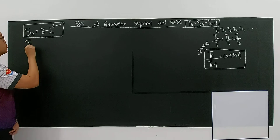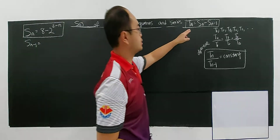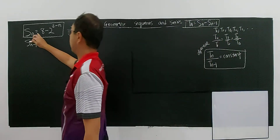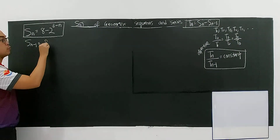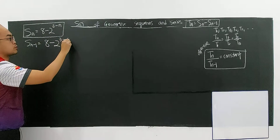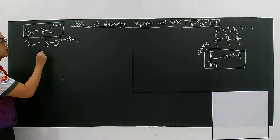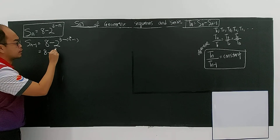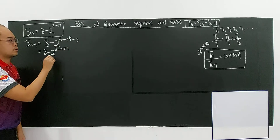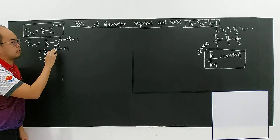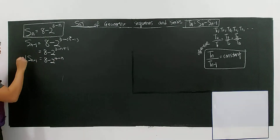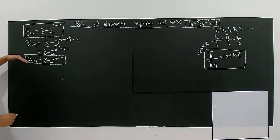To find TN, you need SN-1. Replace N with N-1 in the SN expression, being careful with the index. The exponent becomes 3 minus (N minus 1), which gives 3 minus N plus 1, equals 4 minus N. So SN-1 equals 8 minus 2 to the power of 4 minus N. Make sure both SN and SN-1 are correct before proceeding.